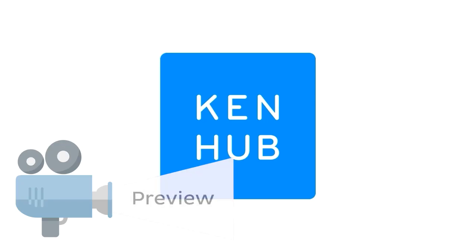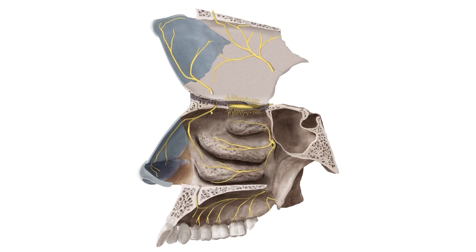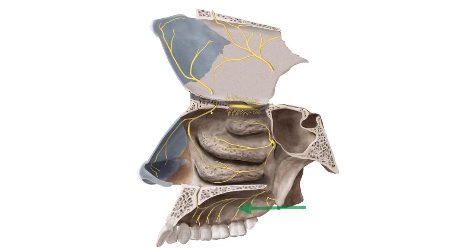Hey everyone, it's Nicole from KenHub and welcome to our tutorial on the nerves of the nasal cavity. In this tutorial we're going to be looking at all the nerves shown on this image of the nasal cavity, which has a bit of the nasal septum turned upwards, the lateral wall of the nasal cavity, the sphenoidal sinus and the maxilla with some of the upper teeth. After talking about these nerves we'll also go over some relevant clinical notes. But first, we're going to begin with a little chat about the nasal cavity's function.